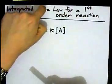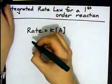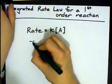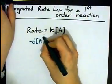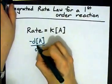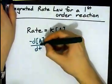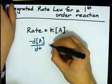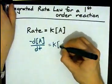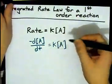To get the integrated rate law, we are going to need to rewrite rate as the rate of disappearance of A over time. This here is the definition of rate, and again, it's proportional to the rate constant times the concentration of A.